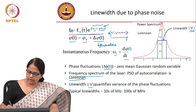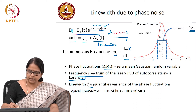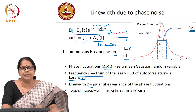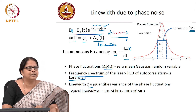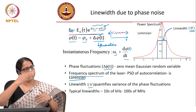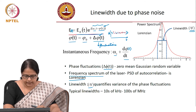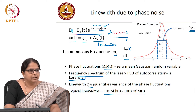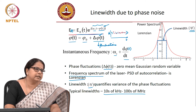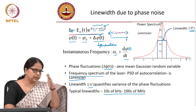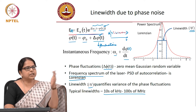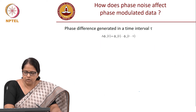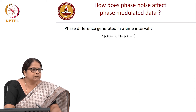Delta f is what quantifies the variance of the phase fluctuations, and it is the number available in the laser's data sheet. Typical line widths of communication-grade lasers are anywhere between tens of kilohertz to hundreds of megahertz. We need to worry about phase noise because when the phase fluctuates during phase modulation, the constellation spreads — which is why we want to quantify it.